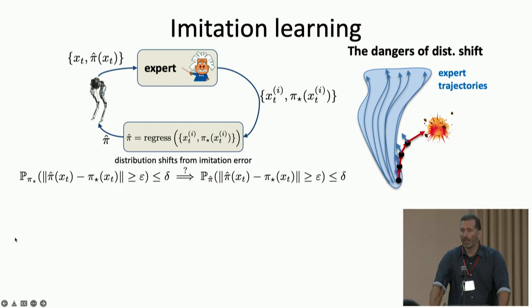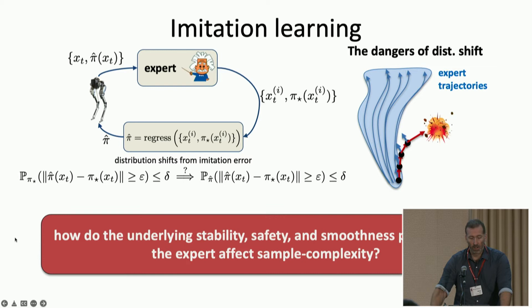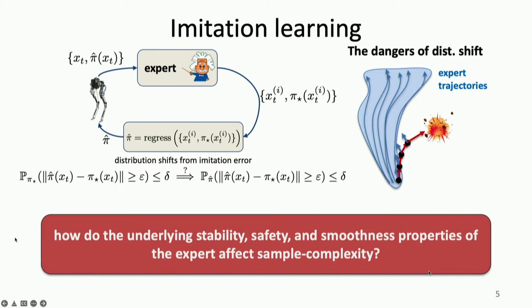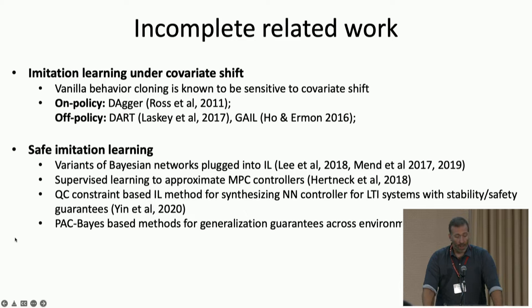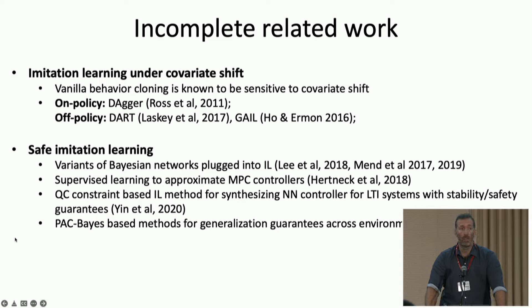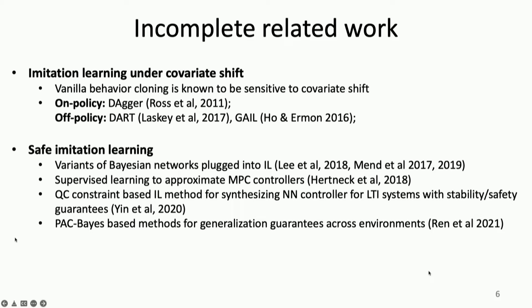This is well known in the imitation learning community. People have addressed this using online, on-policy, or off-policy approaches. On-policy means you can query your expert during tests and ask it to correct the action of your learned policy. Off-policy is essentially injecting noise during training to expand the training distribution. People have recognized the need for safe imitation learning across Bayesian deep learning, controls, and robotics communities, with varying degrees of generality and guarantees. But what's currently lacking — and what got us interested — is a quantitative understanding of what makes this easy or hard. What we'll show is that what's really important here is a specific notion of stability or robust stability in your underlying expert policy.